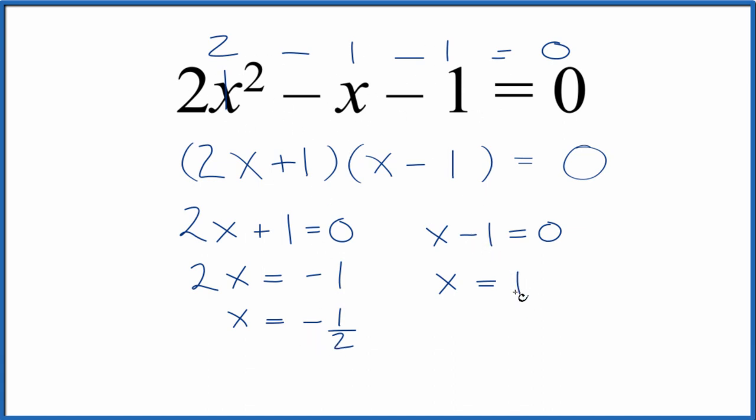If you use the quadratic equation, you get these same answers. This is Dr. B, factoring the equation 2x squared minus x minus 1 equals 0. Thanks for watching.